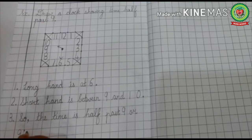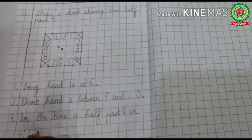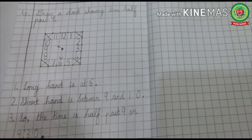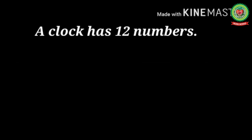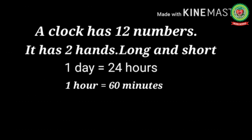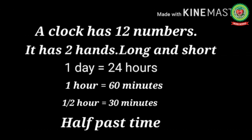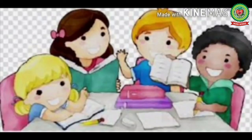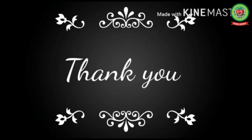Now let's recall what we have done today. A clock has 12 numbers and two hands — long and short. One day has 24 hours, one hour has 60 minutes, half an hour has 30 minutes. We have also practised reading half past time. Now children, open your snap homework and do the related exercises in your copy. Thank you.